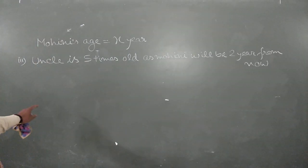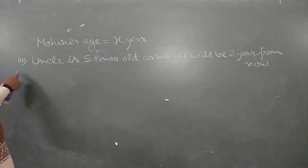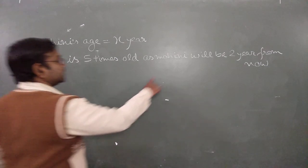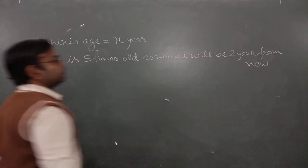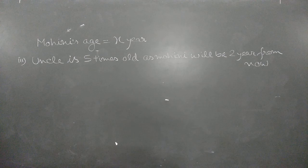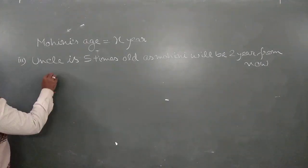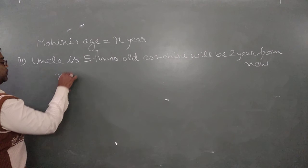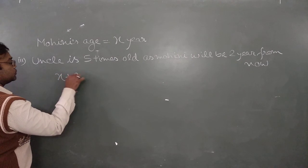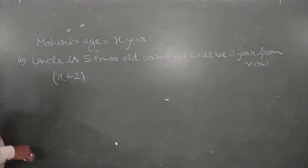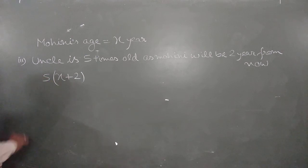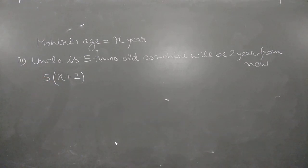The present age of Mohini's uncle: if his uncle is 5 times as old as Mohini will be 2 years from now. Two years from now means X plus 2. Five times that is 5(X+2).